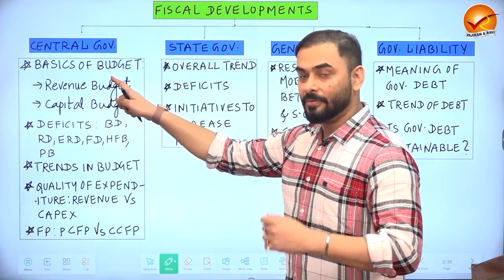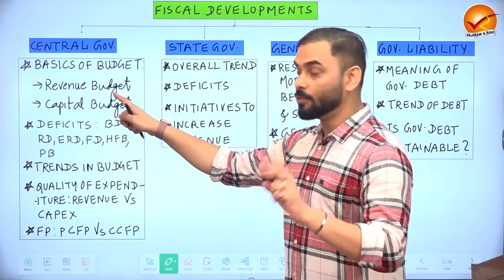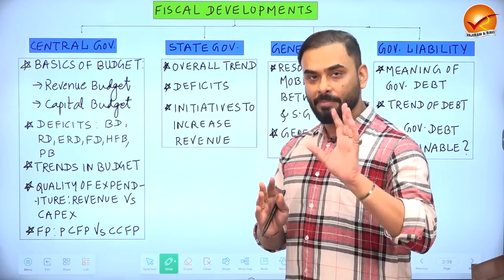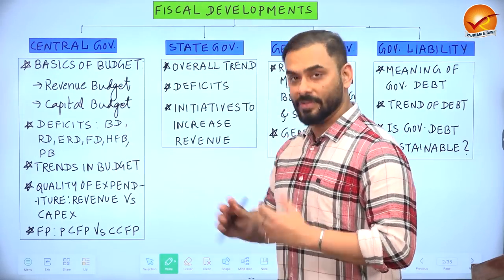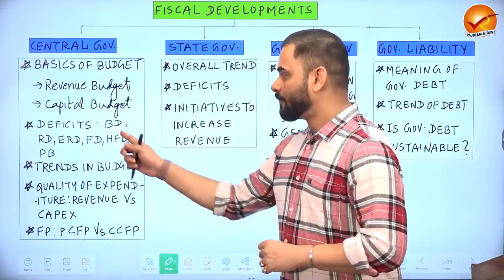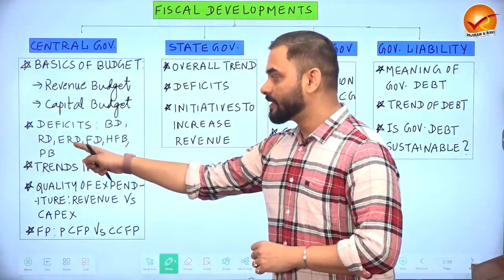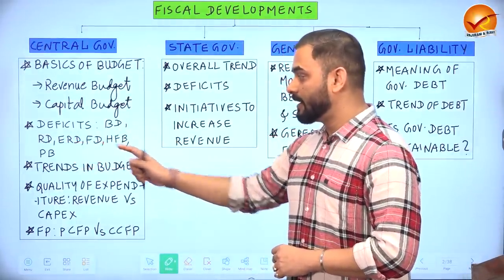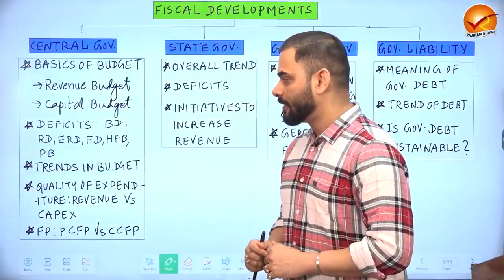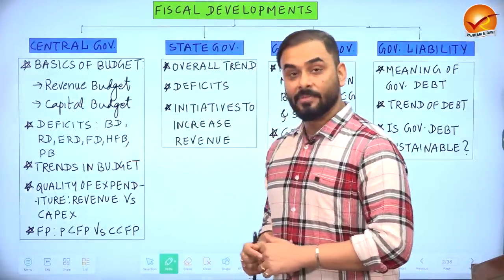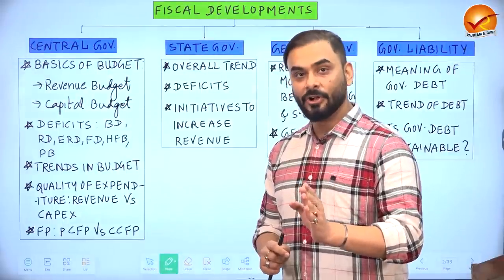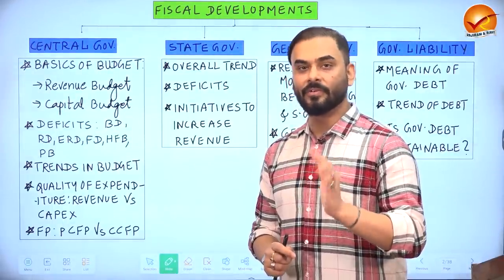We will first look at the basic meaning of budget, covering revenue budget and capital budget. Then we will have a deeper understanding of various types of deficits: budgetary deficit, revenue deficit, effective revenue deficit, fiscal deficit, headline fiscal balance, and primary balance. Headline fiscal balance and primary balance are important tools used by the IMF to assess the health of governments.